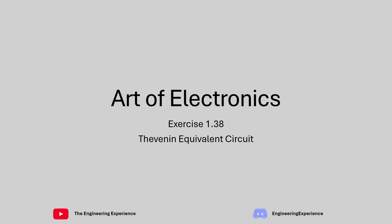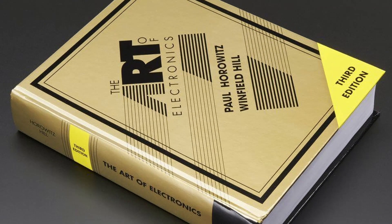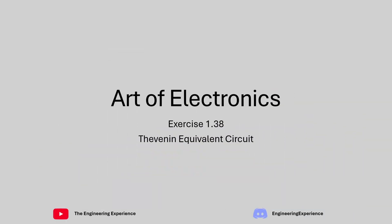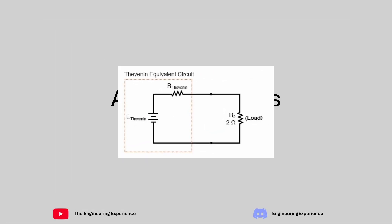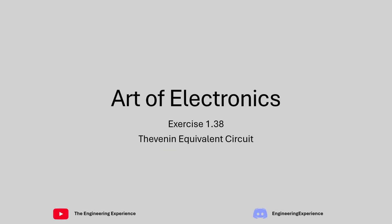Welcome back to my YouTube series on the Art of Electronics questions. Today I'm going through exercise 1.38, which is on the Thevenin equivalent circuit, a topic which we have explored before. However, we are getting to the end of chapter 1, where we are summarizing the different topics that we've learned through the chapter. So I'll guide you through this question. It is in two or three parts, depending on how you define it.